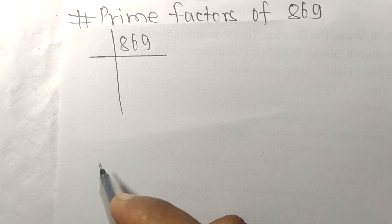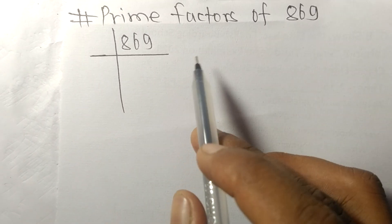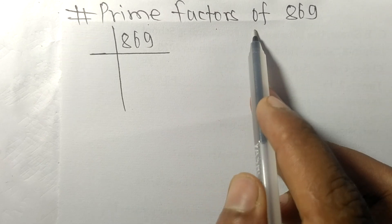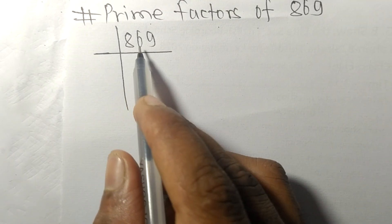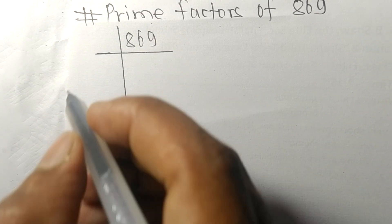So today in this video we shall learn to find the prime factors of 869. 869 is exactly divisible